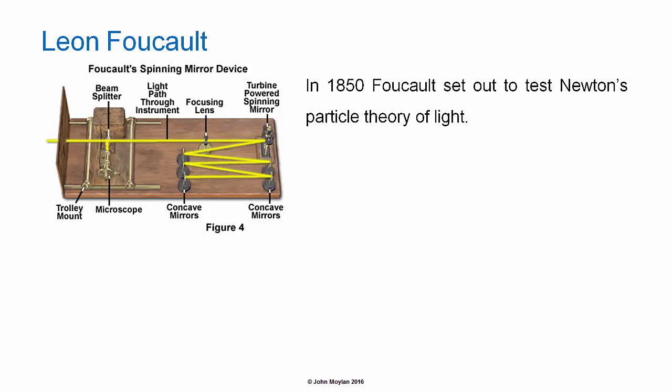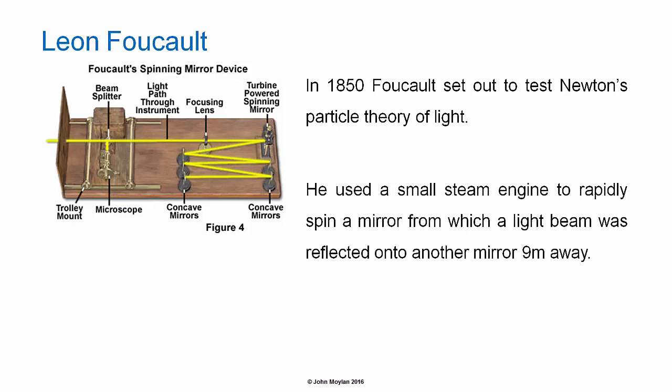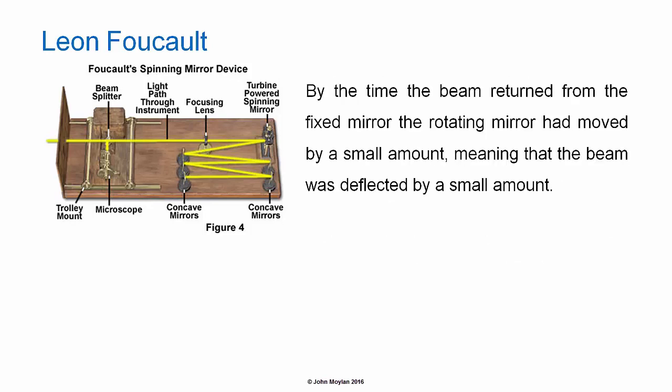Leon Foucault. In 1850 Foucault set out to test Newton's particle theory of light. He used a small steam engine to rapidly spin a mirror, from which a beam of light was reflected onto another mirror 9 meters away. By the time the beam returned from the fixed mirror, the rotating mirror had moved by a small amount, meaning that the beam was deflected by a small amount.